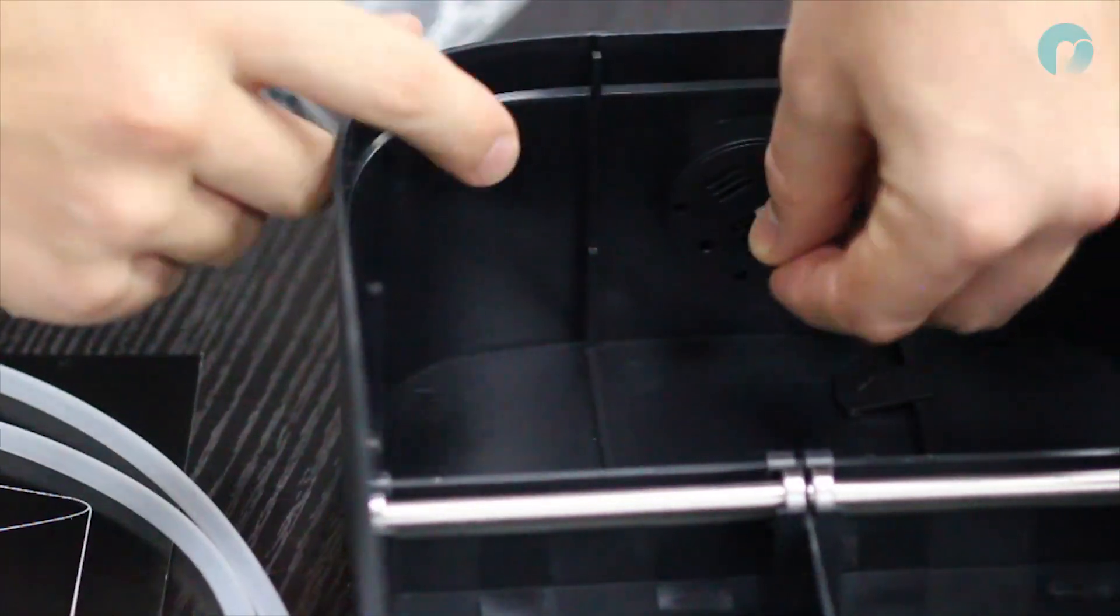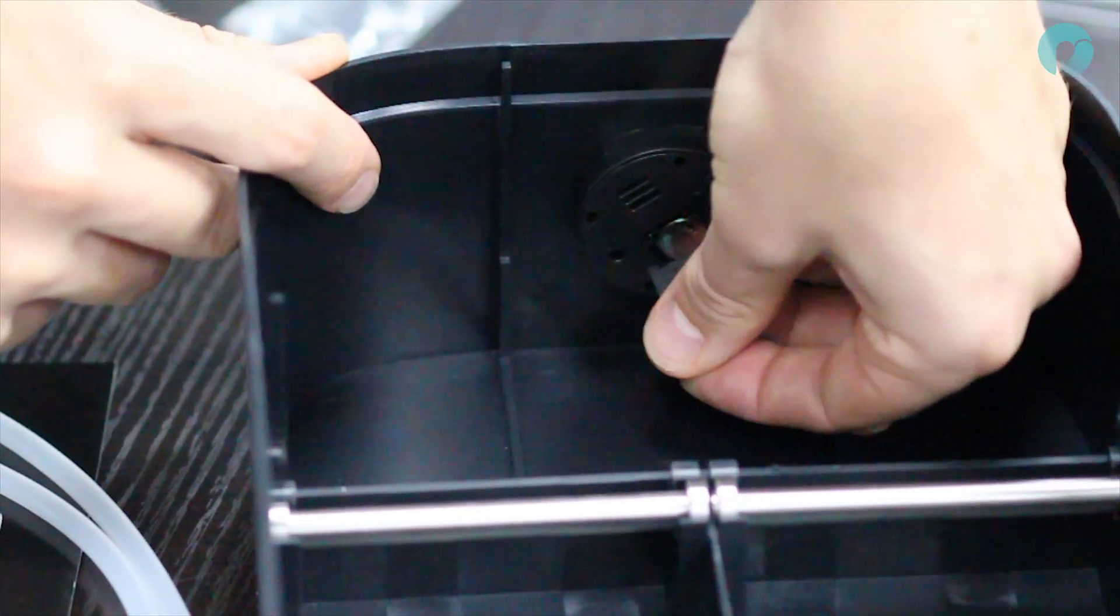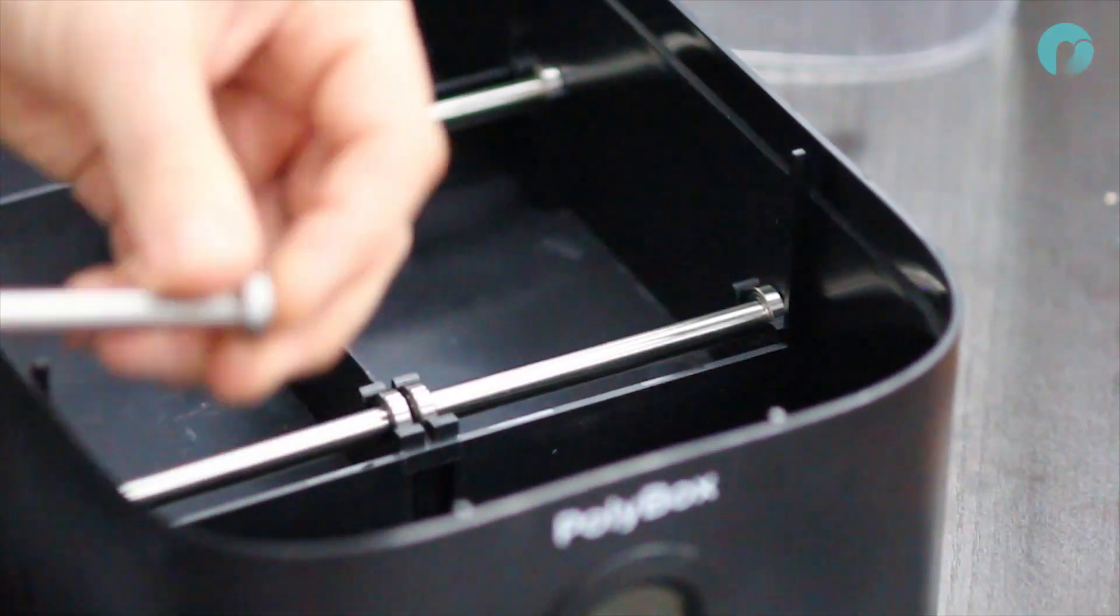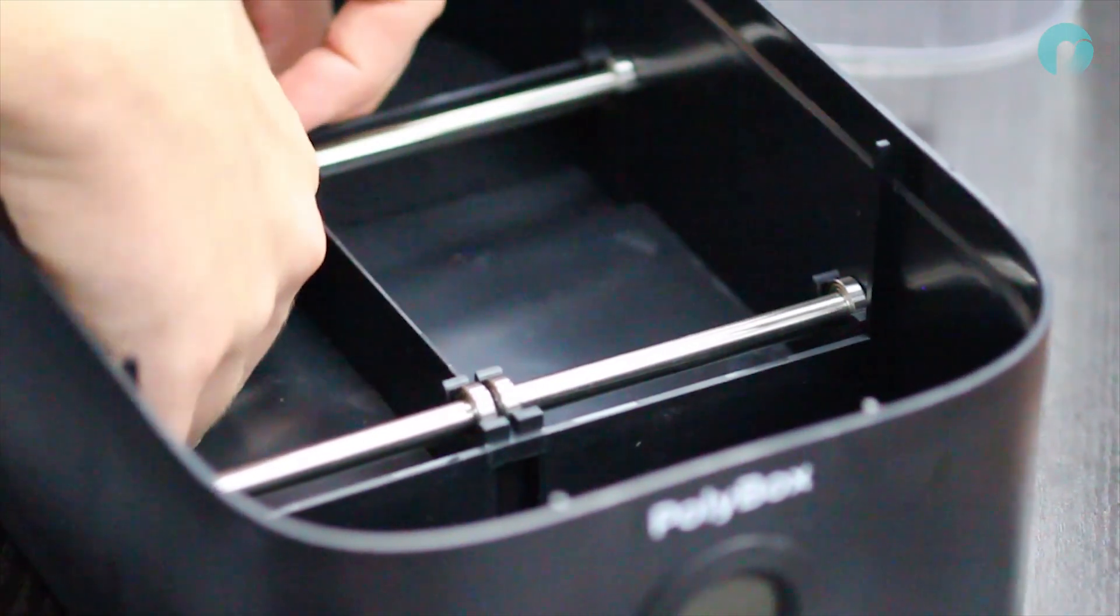To get started, remove the battery from its packaging and install in the back of the thermohygrometer. Then slide one bearing onto the end of each steel rod and snap the rods into place in the base of the unit.